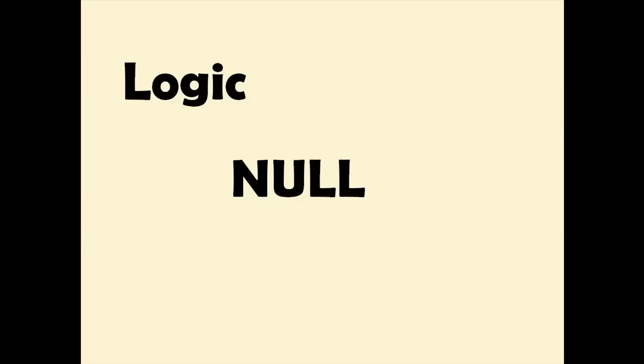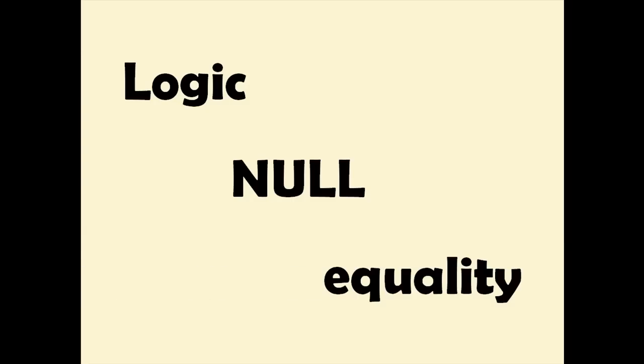To summarize: if you understand logic well, if you understand nulls well, and if you understand that when you search in the database you must always have strict equality, there is no reason to see rows vanish, and there is no reason for horrors. Thank you.